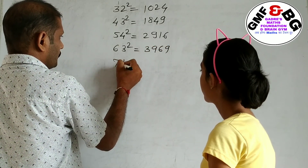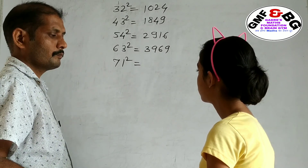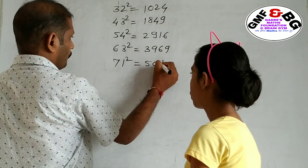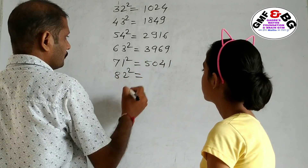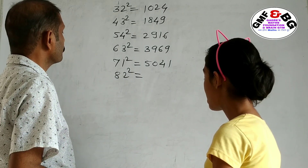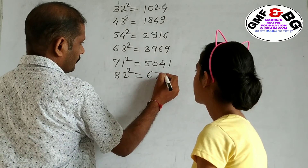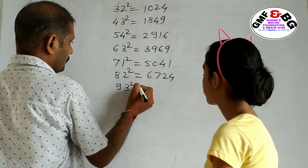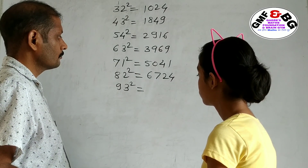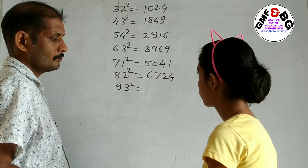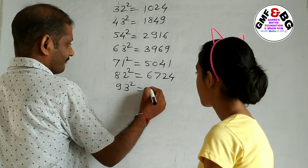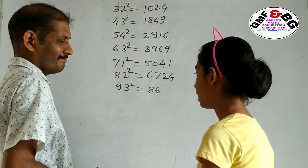Next: 71 squared equals 5041. Next: 82 squared equals 6724. Next: 93 squared equals 8649.